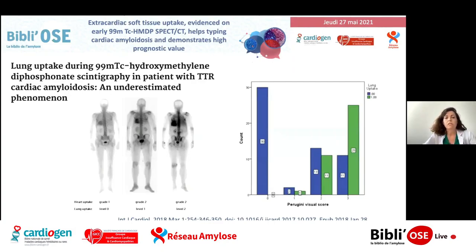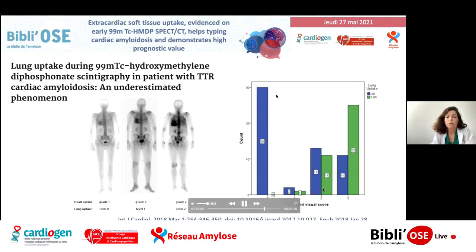Les fixations extracardiaques sur ces scintigraphies osseuses ont été décrites dans un papier initialement publié en 2018, qui s'est principalement intéressé à la fixation pulmonaire. On voit que chez les sujets contrôle, on n'a aucune fixation pulmonaire, et qu'avec le score de Perugini A2 puis A3, on a une augmentation du pourcentage de patients avec une fixation pulmonaire chez ces patients atteints.